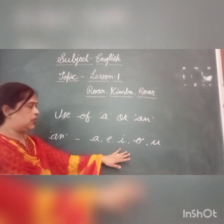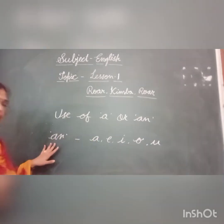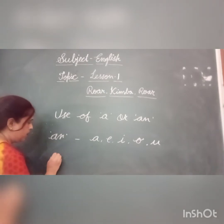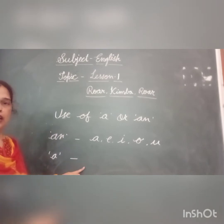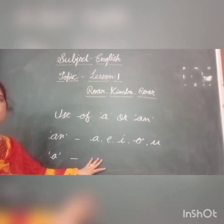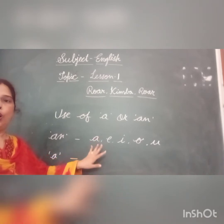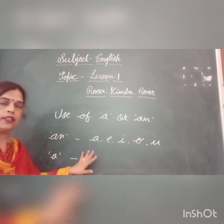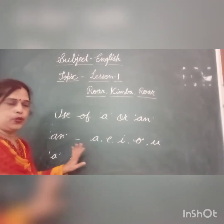Words that start with vowels use 'an' — for example, 'an egg.' Words that start with a consonant use 'a.' We have 5 vowels and the rest, 21 letters, are consonants.